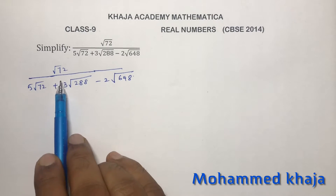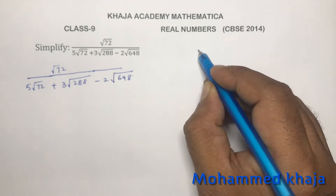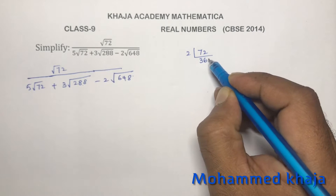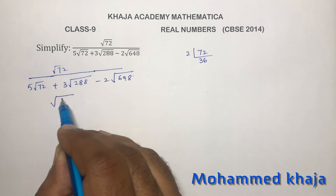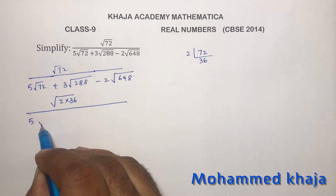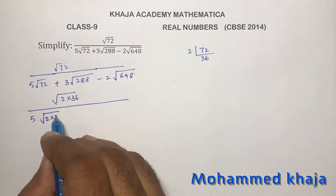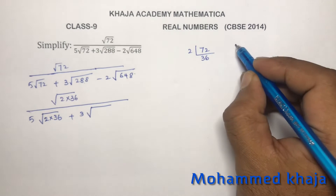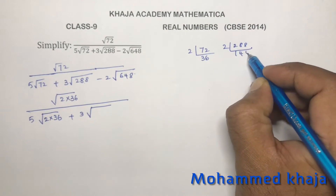Now if we start doing prime factorization for these numbers, here is a small logic. For 72, if you do prime factors: 2 times 36. If you are good with perfect squares like 36, you can write √72 as √(2 × 36). Similarly, in the denominator, 5 times 72 can also be written as 2 × 36.